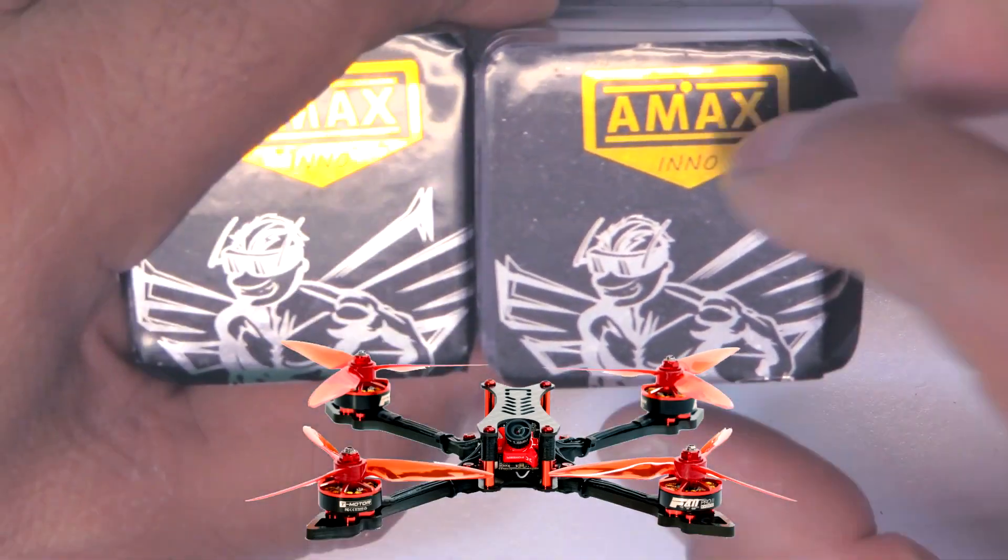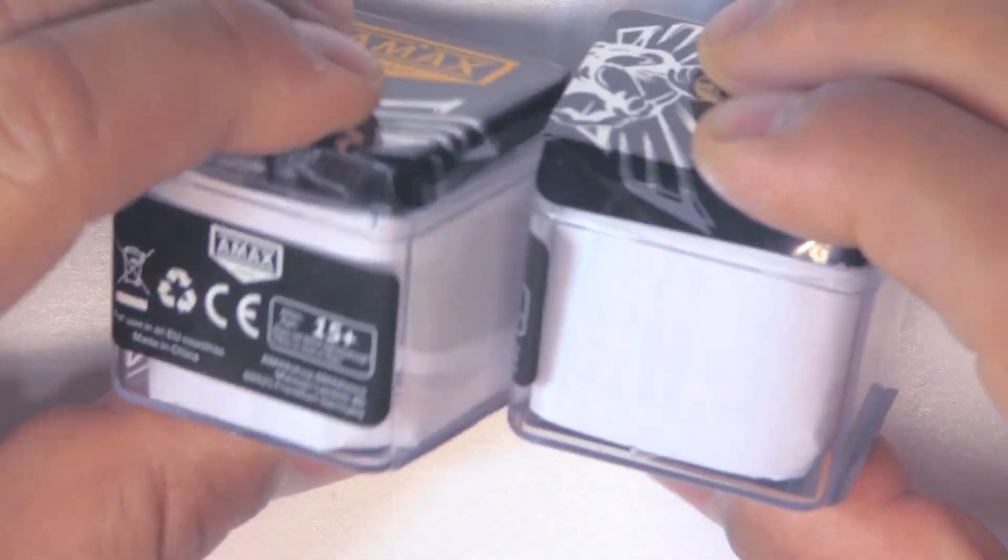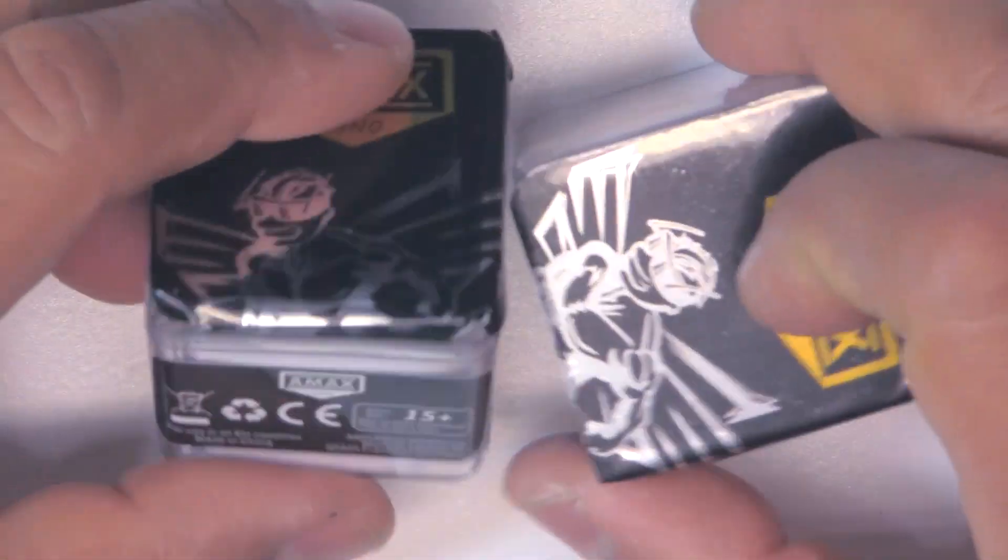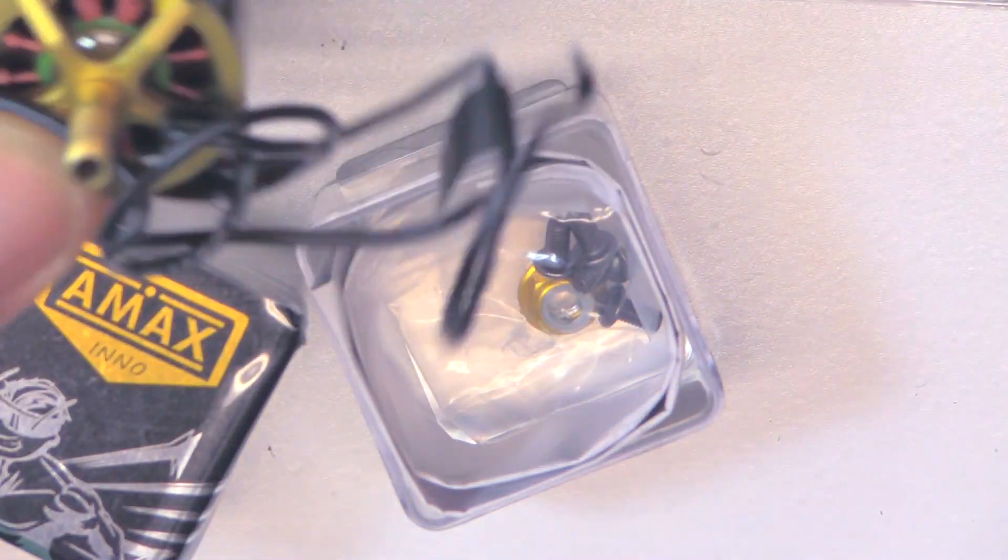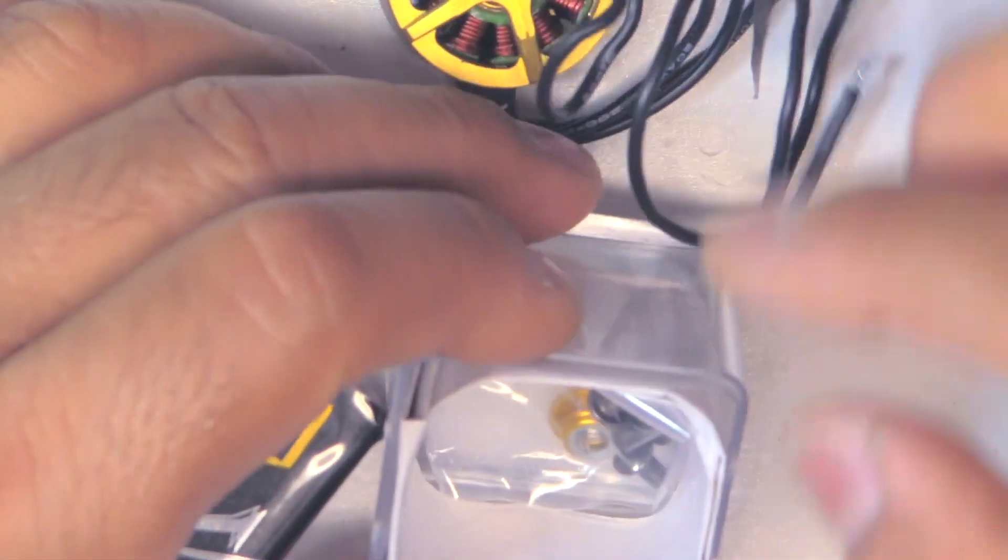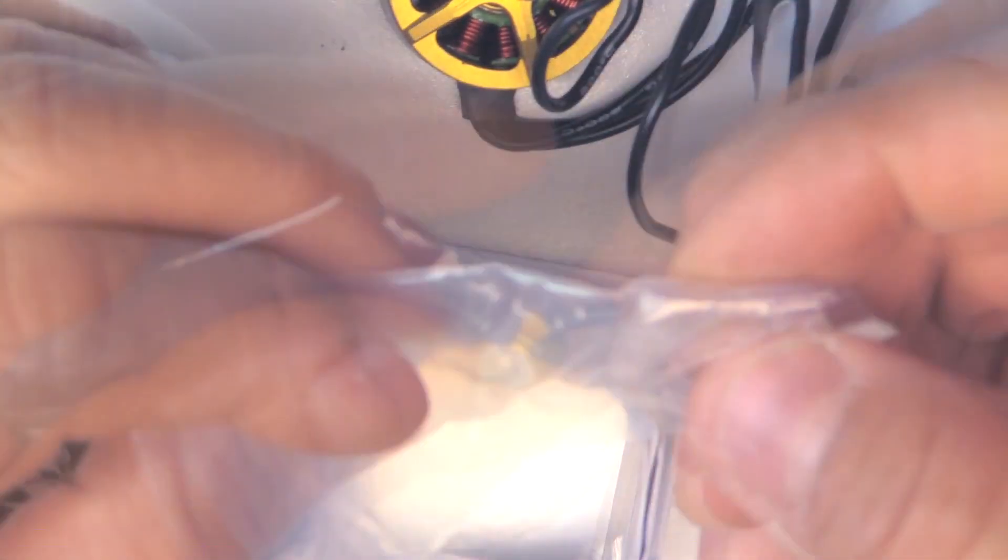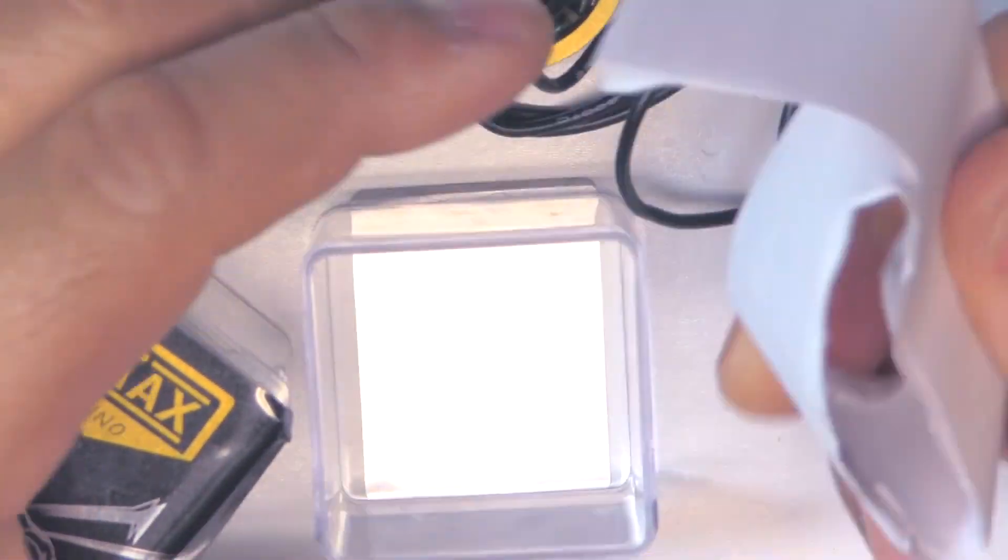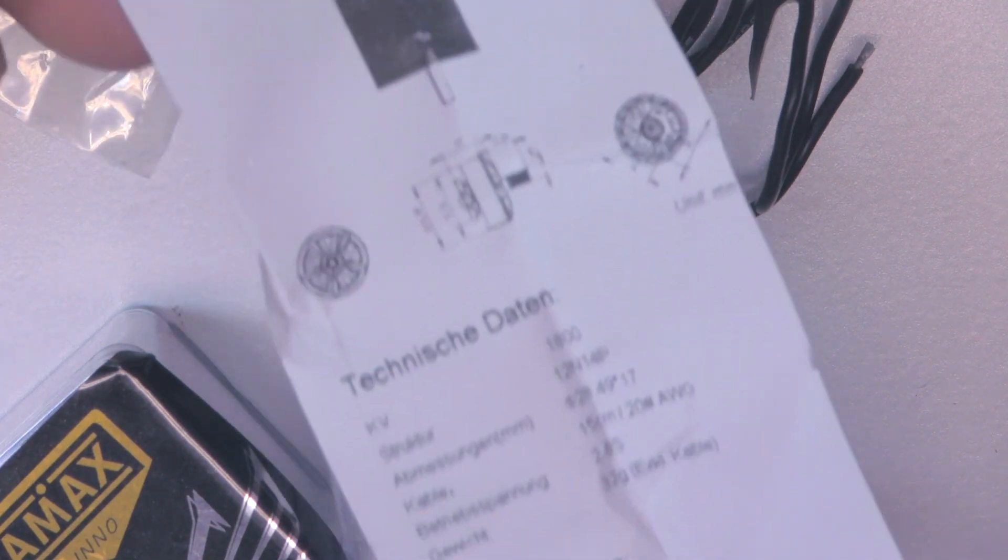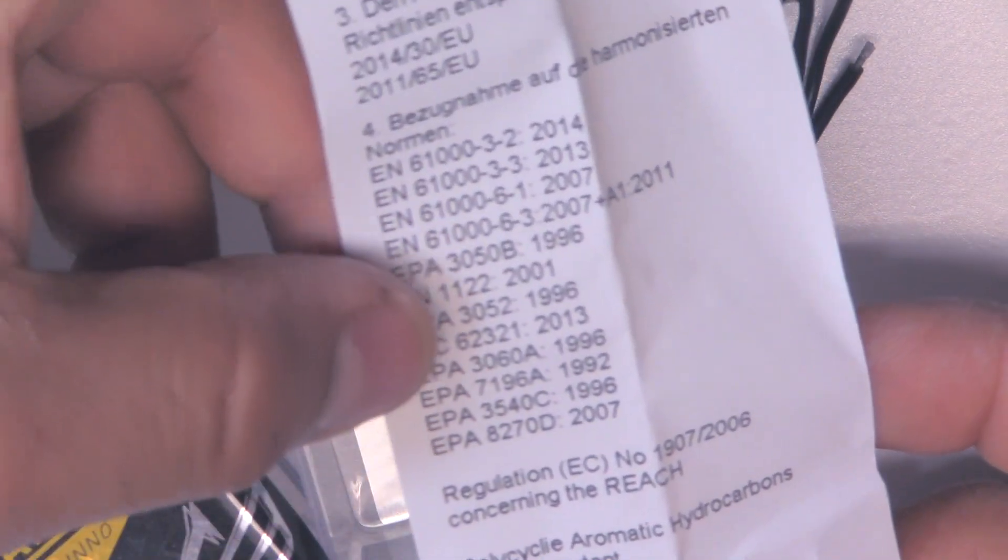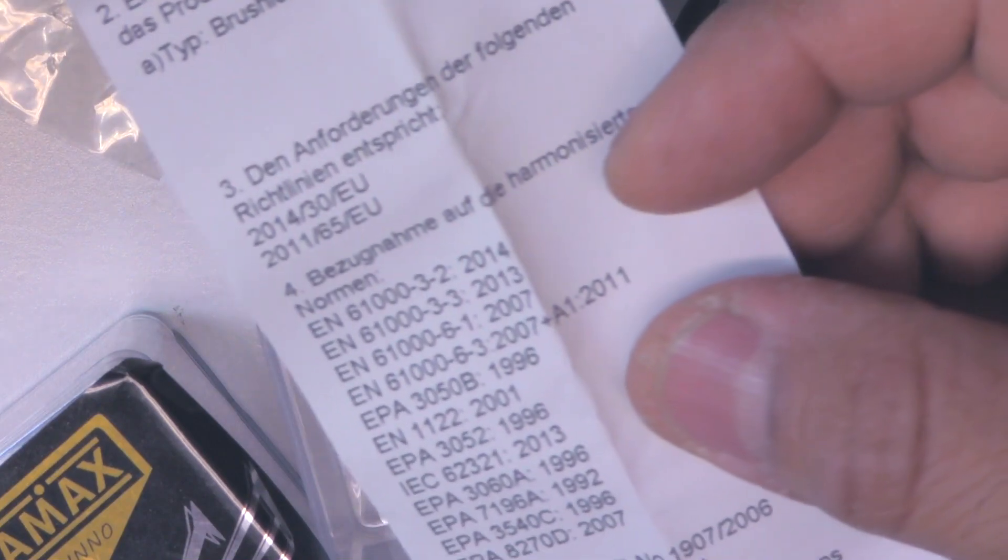These motors come in plastic boxes and are pretty well packaged. Besides that they come wrapped in cushion paper in a little baggy with the motors, low profile lock nuts, M3 screws, and some instructions in German. This motor is made for EU and passes all these EU standards.